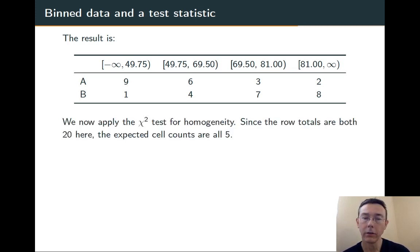The expected cell counts are always five because we've chosen our bin cutoffs to be even, and if the null hypothesis is true, these cutoffs should divide each category into even pieces.